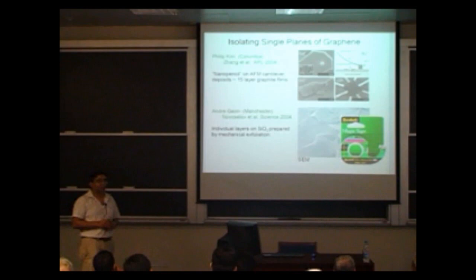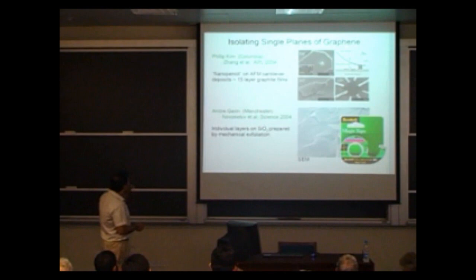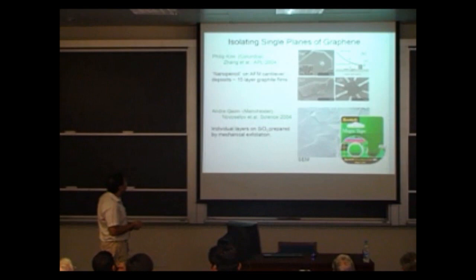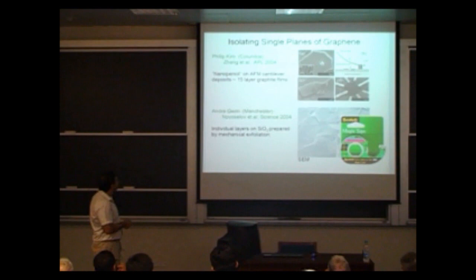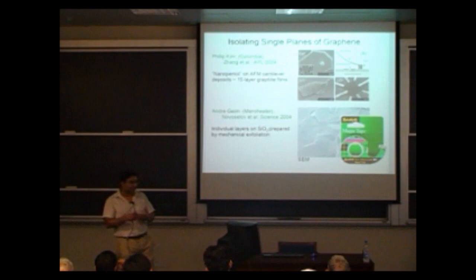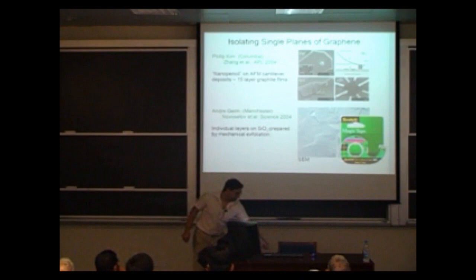These achievements were recognized by the Nobel Committee and they won the Nobel Prize. At almost the same time, Philip Kim's group at Columbia University was also trying to isolate graphene. The method they used was attaching graphite to an AFM cantilever and moving it against a substrate, leaving small crystallites of graphene. But they were actually multi-layers of graphene, not single layers — so they were not able to achieve a single layer. Geim and Novoselov were the ones who achieved single layers, and they also did optical microscopy measurements where they were able to see the contrast between single layer and multiple layers, proving they had single layers — quite an experimental achievement.